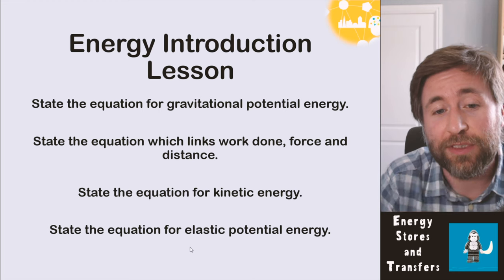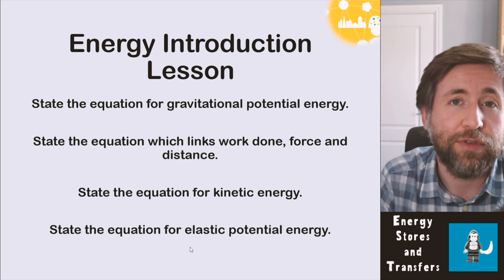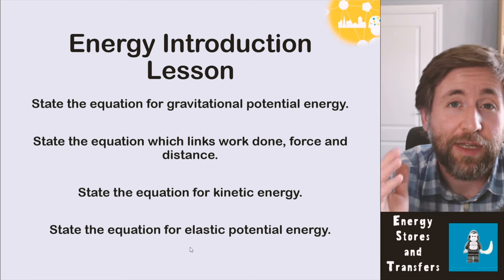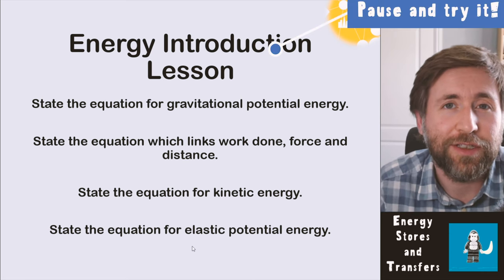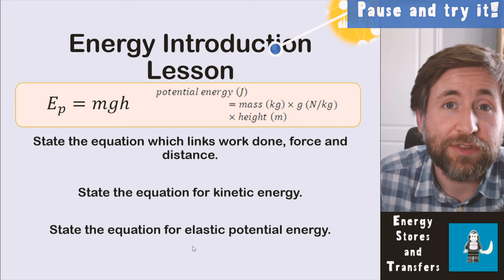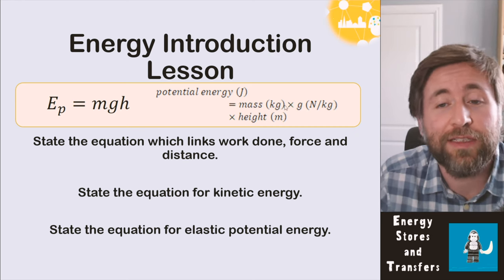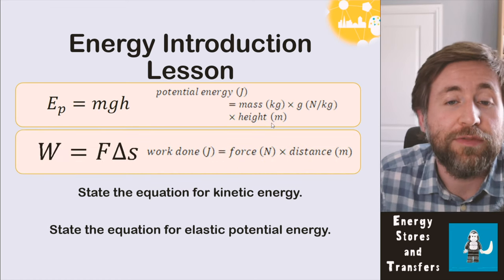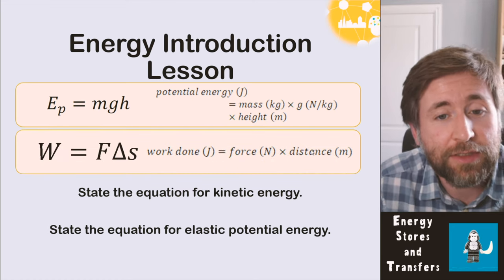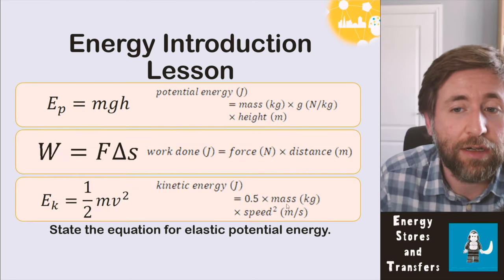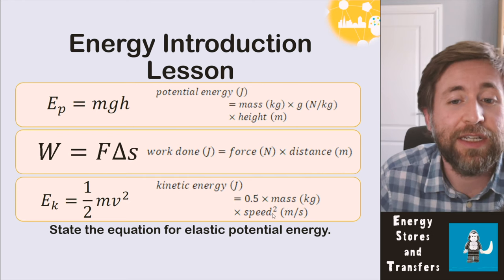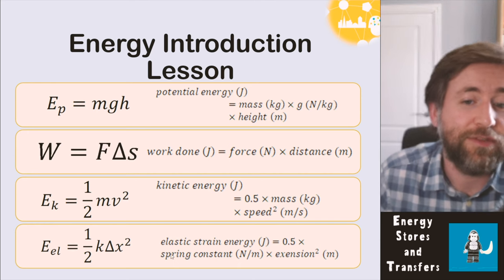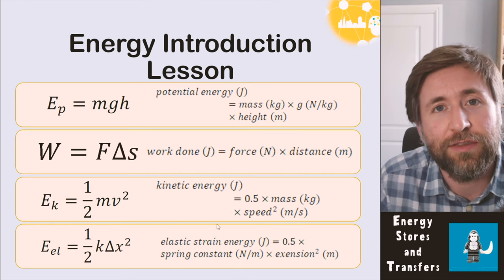These are some things you need to memorise for your GCSE. Pause now and have a go writing them out. The equation for gravitational potential energy is mass × g × height. Work done is force × distance. Kinetic energy is ½ × mass × speed². Elastic potential energy is ½ × spring constant × extension².